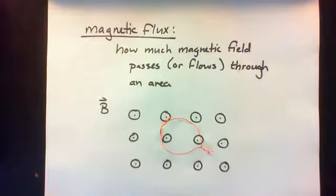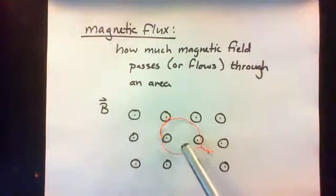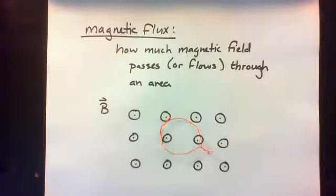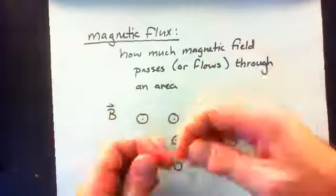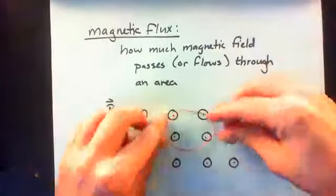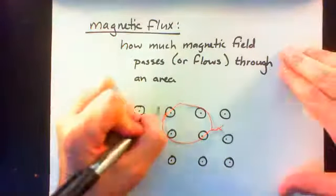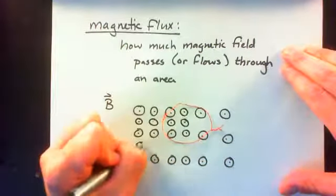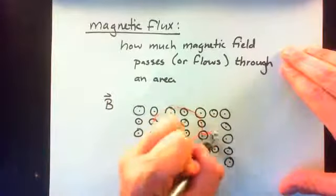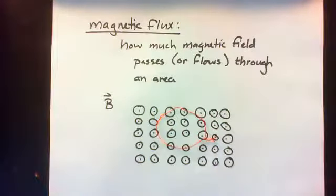If I have a loop like so, the magnetic flux is equal to how much magnetic field is passing through that loop. One way we can increase the magnetic flux is to make the loop bigger — to increase the area of the loop. Now more magnetic field is passing through it. Another way we can increase the magnetic flux is to make the magnetic field stronger. If the magnetic field is stronger, there are going to be more magnetic field lines passing through the loop.